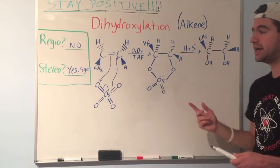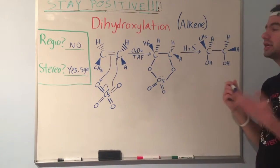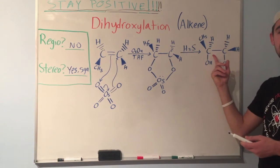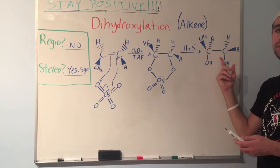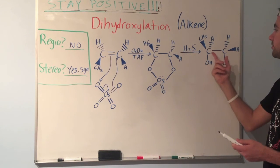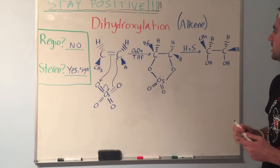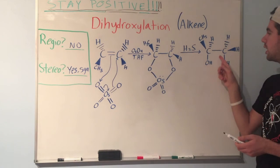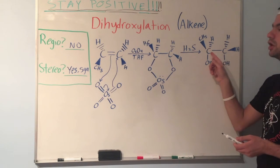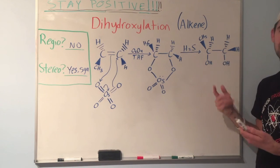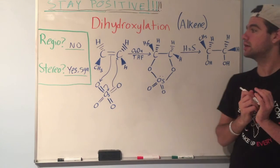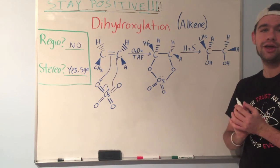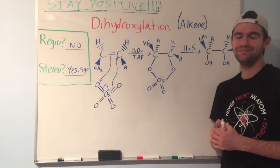One last thing: just technical terminology in case your teacher wants you to be responsible for this — this is called a vicinal diol, because you have two hydroxyl groups on adjacent carbons. So that's dihydroxylation. It's not too bad, and I really hope this made it a little easier to understand.